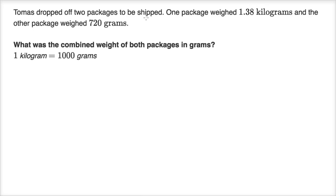Tomas dropped off two packages to be shipped. One package weighed 1.38 kilograms and the other package weighed 720 grams. So the first one they give in kilograms and the second one they give us in grams. What was the combined weight of both packages in grams? I'm going to convert both of these to grams and then add them up to get the combined weight. We already know the second one is 720 grams. But what's the first one in terms of grams?